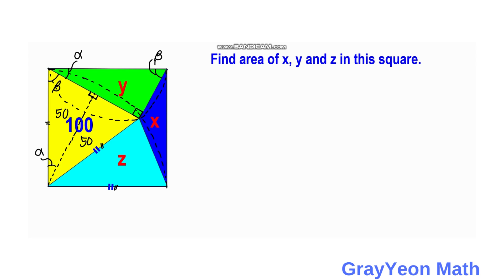The green right triangle and the yellow right triangle near the side of the square have two congruent angles, and in between them are sides of the square — the same shared distance. Let's call half of this distance t, so the full distance is 2t. Since these two triangles share a common side between two equal angles, the triangles are congruent, and therefore Y is equal to 50.